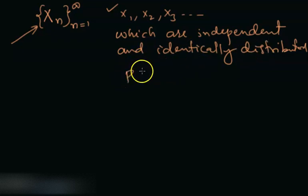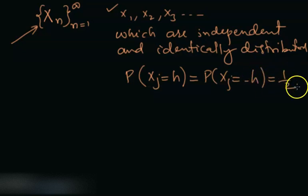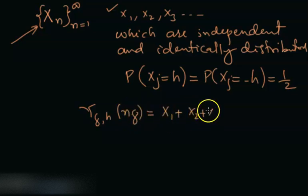And further, we assume that the probability that xj will be going to h is same as xj going to minus h. And this probability is 50%. So 50% chances it could go up or it could go down. Then we define a random variable y delta h of n delta to be x1 plus x2 plus x3 till xn, or we can write the sum from i equals 1 to n of x_i.